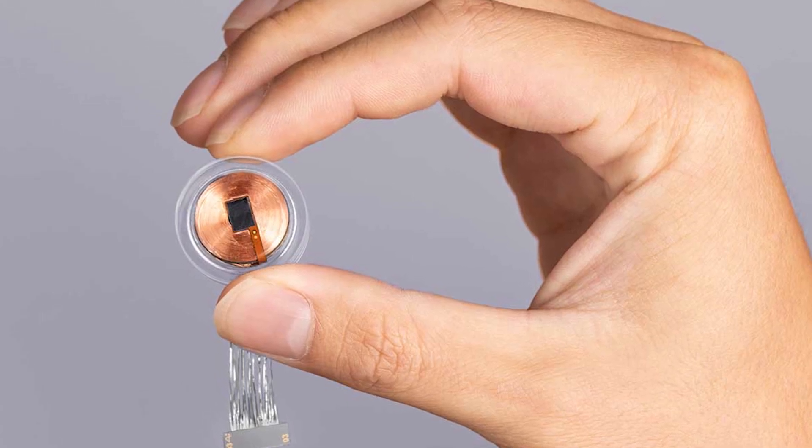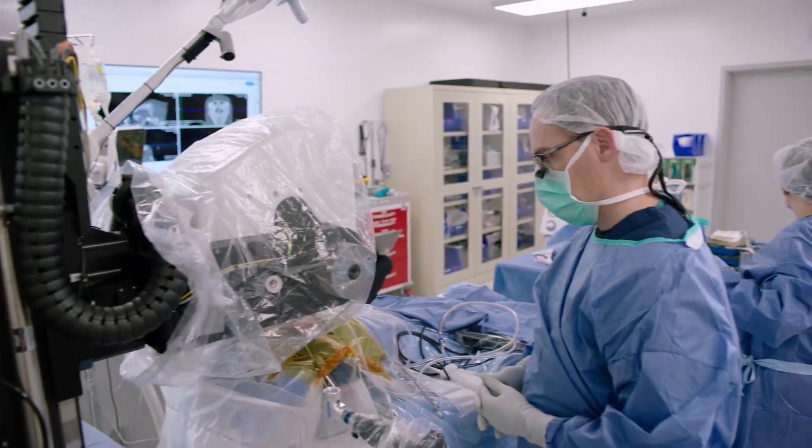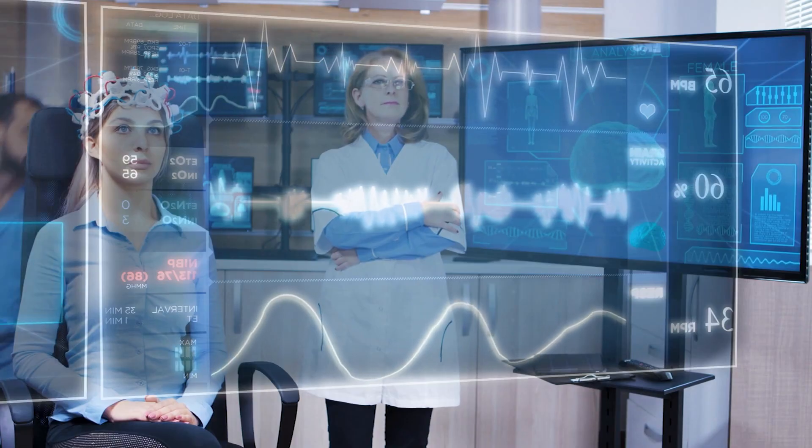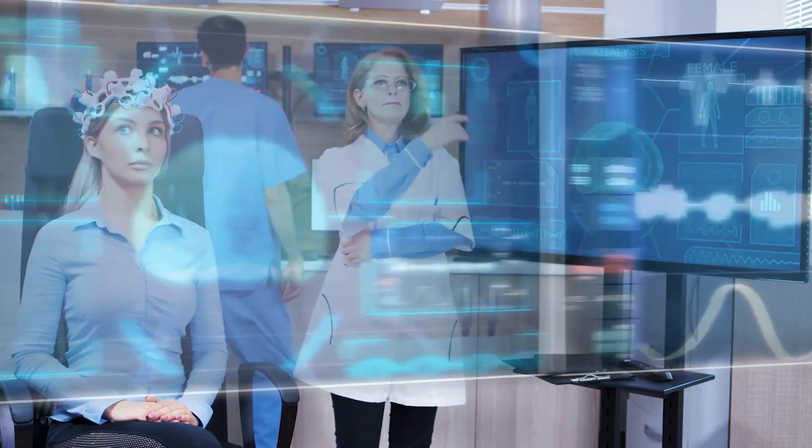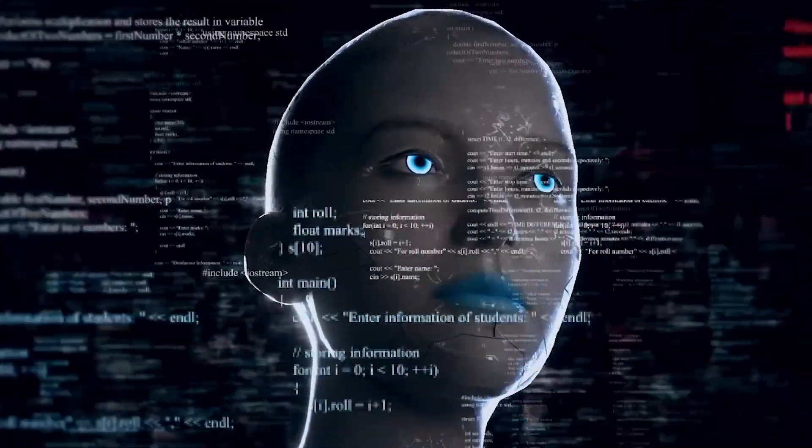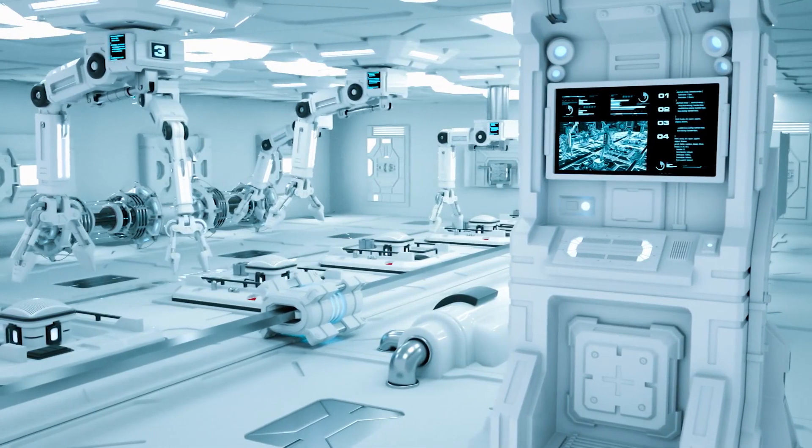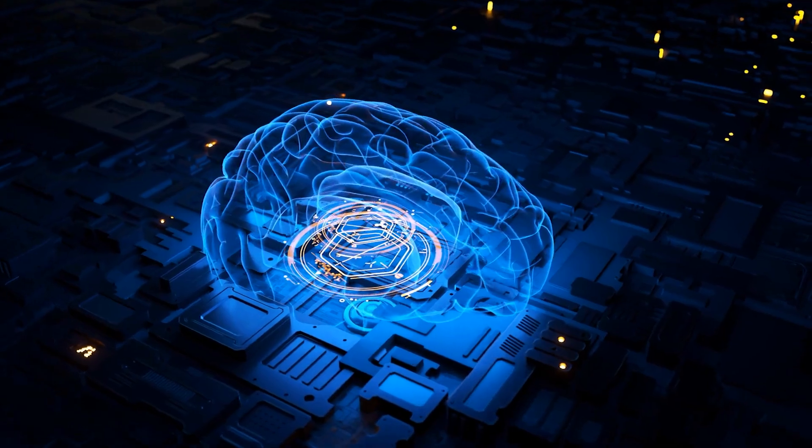Simply put, Neuralink is a small device that will be surgically implanted into your brain. With it, you'll be able to communicate with machines and even control them directly from your brain. Basically, with this chip, Elon Musk wants to control machines using only the power of thought. You won't even have to move to control machines. Your mind will do it all for you.